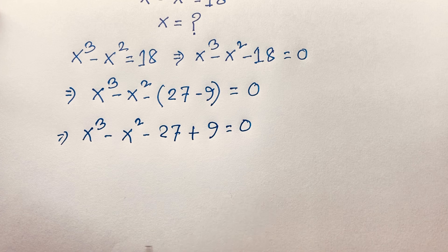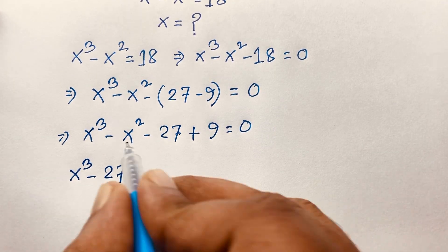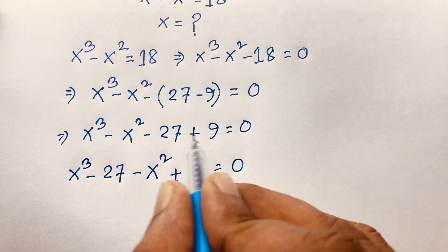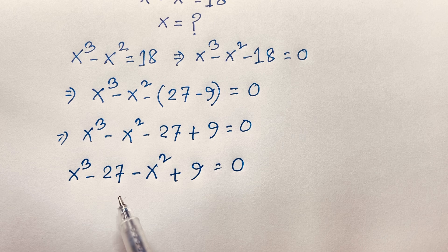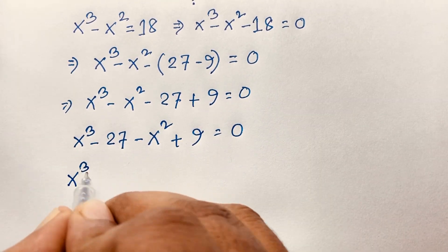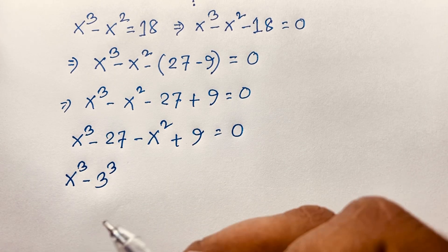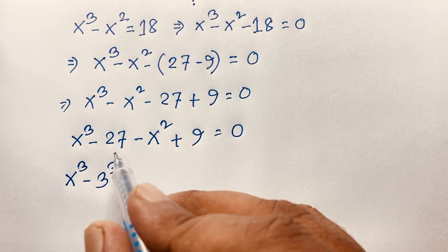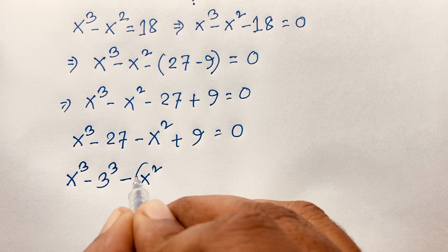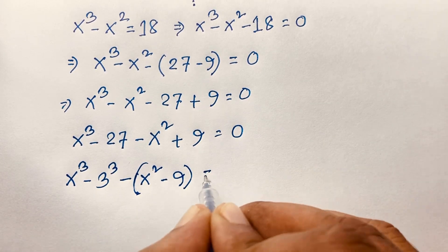Now here: x cubed minus 27, and negative x squared plus 9 is equal to 0. I rearranged the terms because 27 is a cubic number. Here, x cubed minus 3 to the power of 3: since 3 times 3 is 9, and 9 times 3 is 27, so 27 equals 3 to the power of 3. And here, taking negative 1 as common from the x squared and 9 terms, so it will be equal to 0.